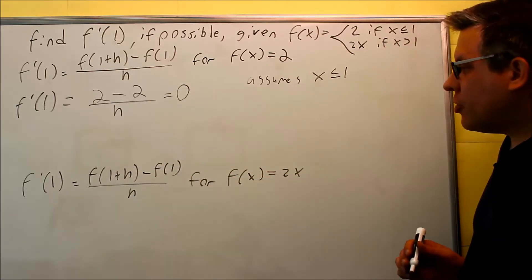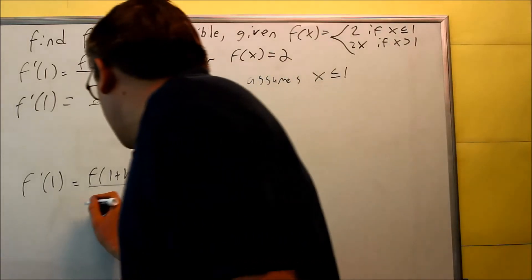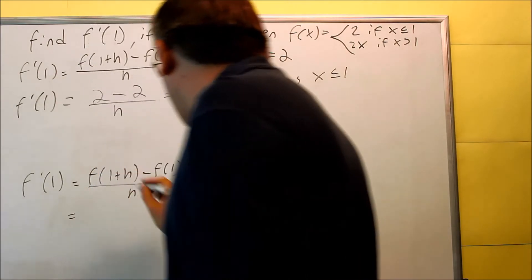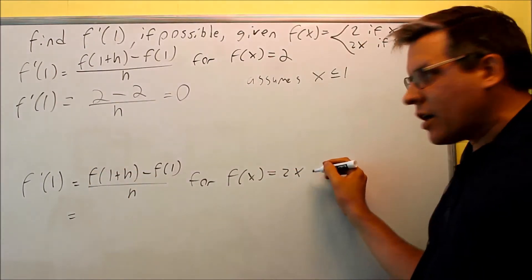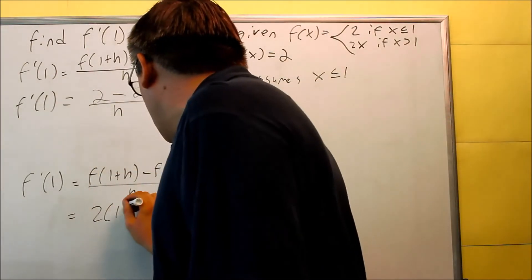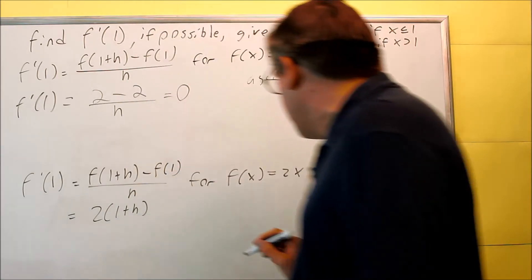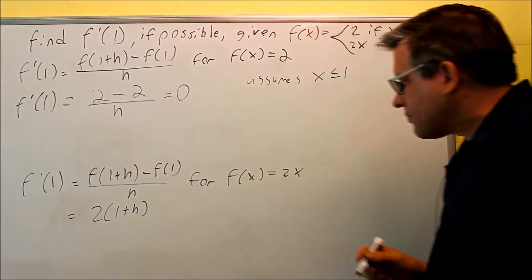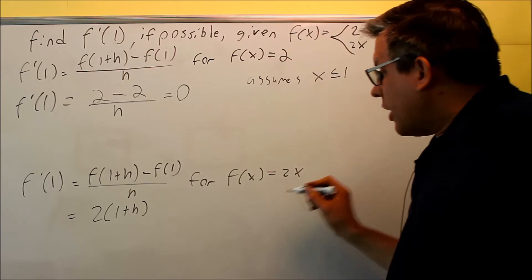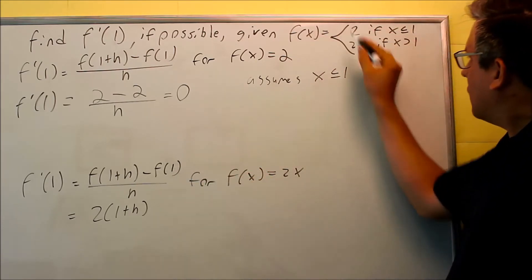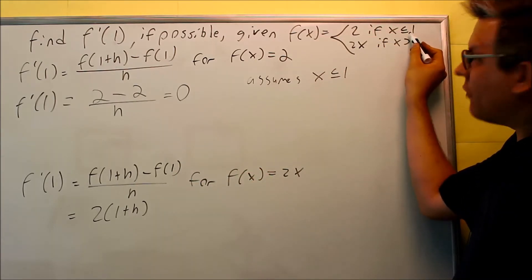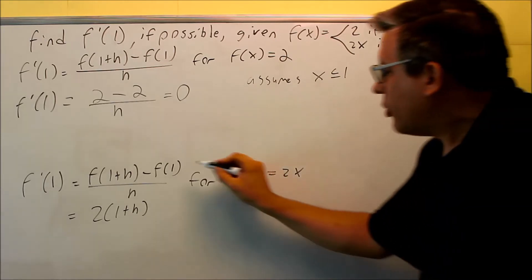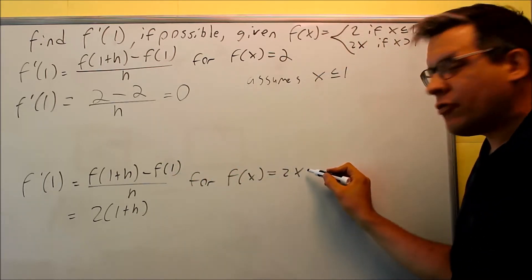Now for this one, I'm going to do the same thing again. I'm going to do f of 1 plus h. This time I'm using 2x, so I'm going to put in 1 plus h for that one. Again, f of 1, 1 is only defined for the first one. So even though I'm putting in f of 1, I'm using a different function for f of x.